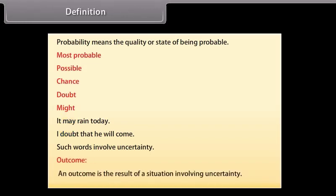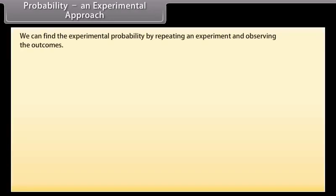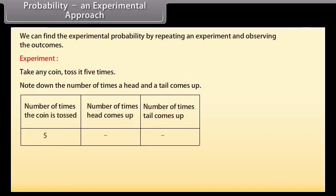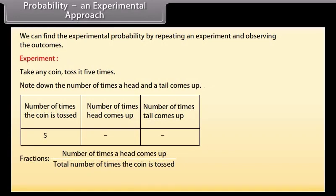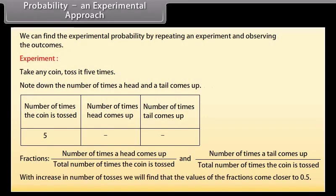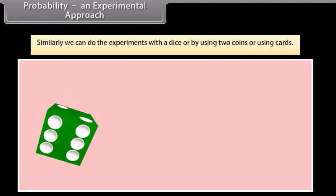Outcome. An outcome is the result of a situation involving uncertainty. Probability: An experimental approach. We can find the experimental probability as number of times a tail comes up upon total number of times the coin is tossed. As we increase the number of tosses, the values of the fractions come closer to 0.5. Similarly, we can do experiments with a dice or by using two coins or cards.